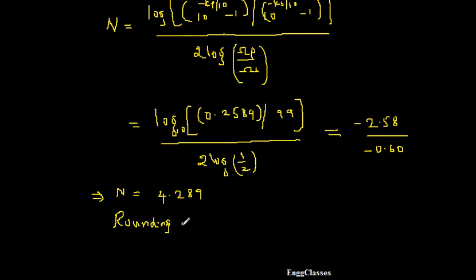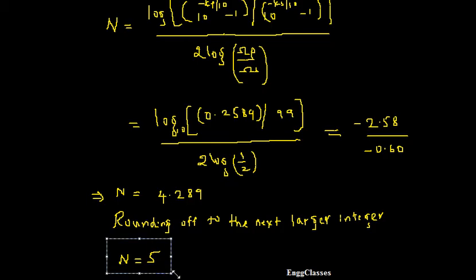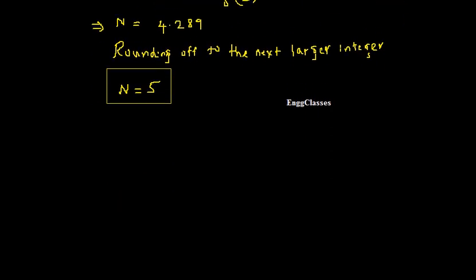We round off to the next larger integer. Always be careful — we have a tendency to make n equal to 4, but it is not 4, it is 5. Whether the decimal part is greater than 0.5 or less than 0.5, we always round off to the next larger integer. So n is equal to 5. We found the order of the filter as n equal to 5, and we can now move on to the second step.